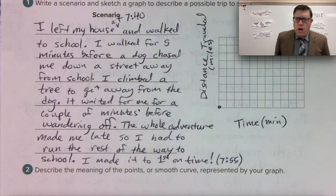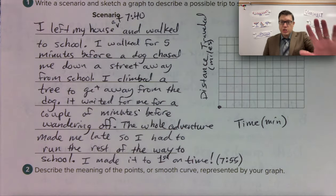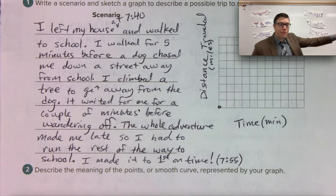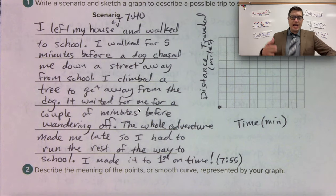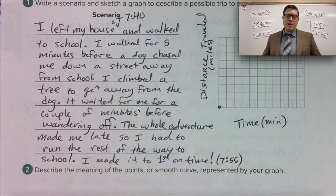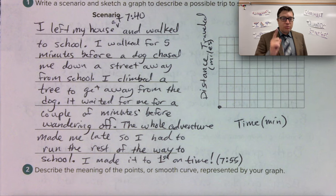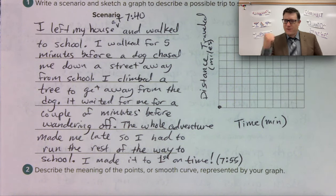Here's my story. I left my house at 7:40 and walked to school. I walked for five minutes before a dog chased me down a street away from school. I had to climb a tree to get away from the dog. It waited for me for a couple of minutes before it wandered off. The whole adventure made me late, so I had to run the rest of the way to school. And I made it to first period on time at 7:55.